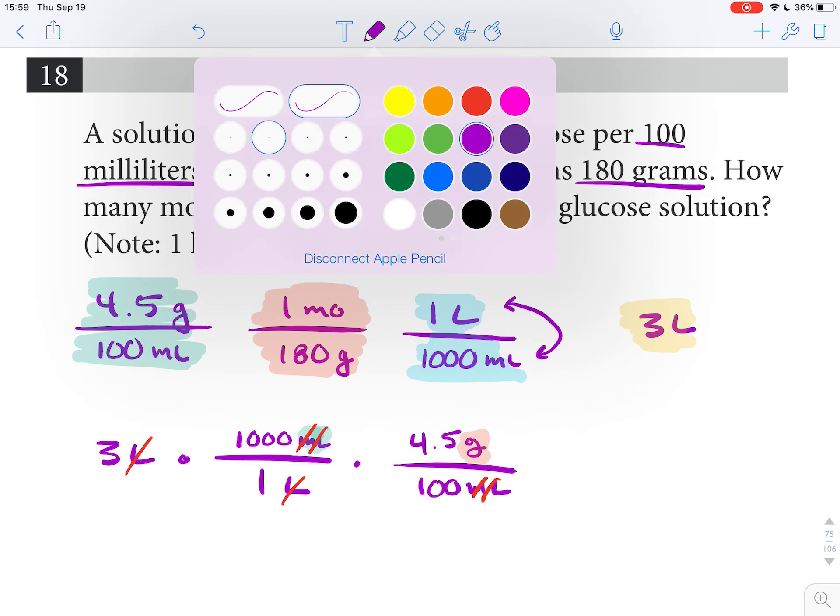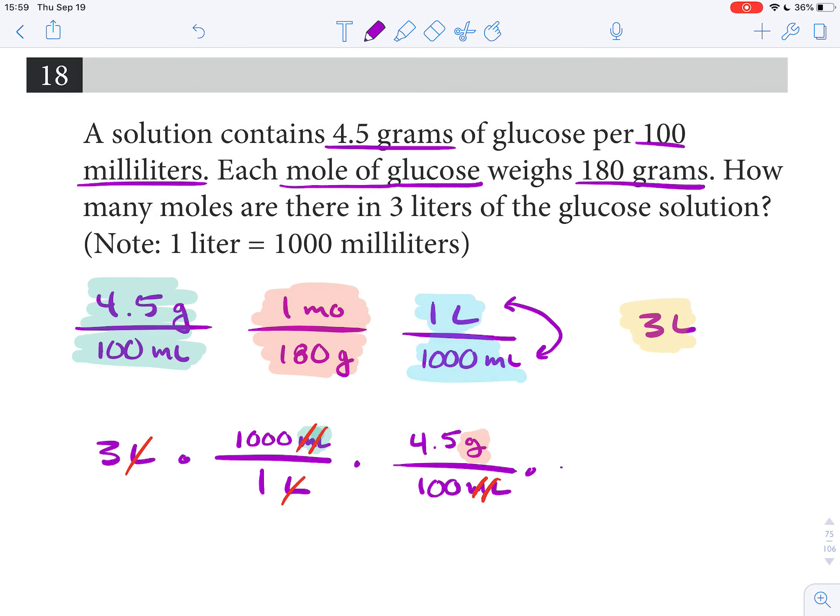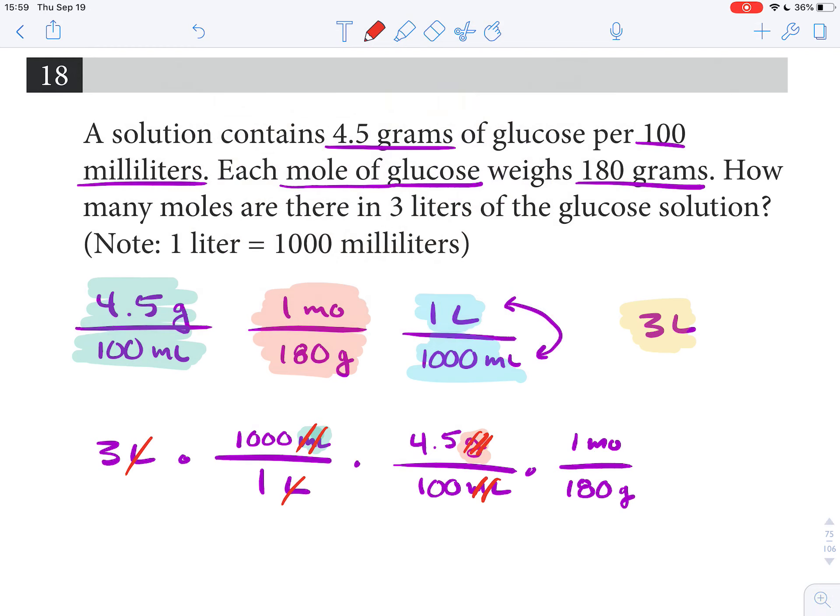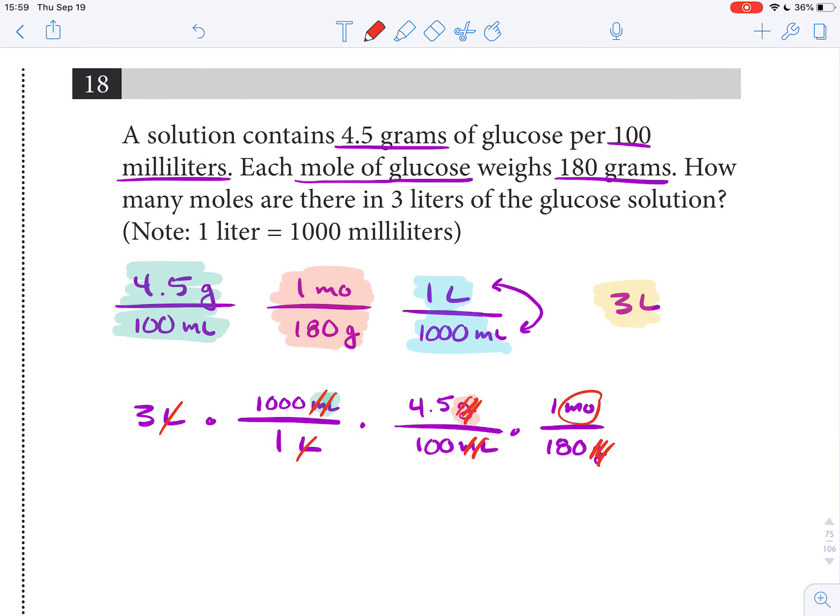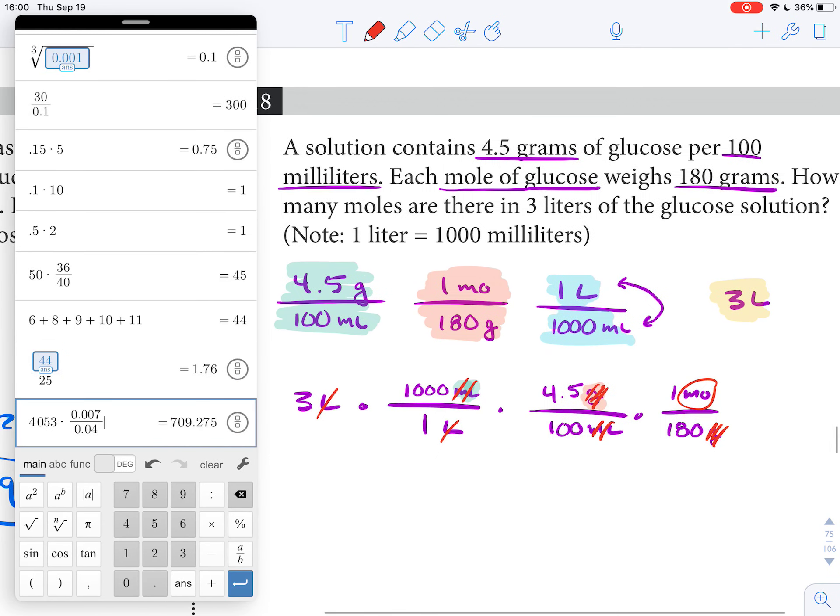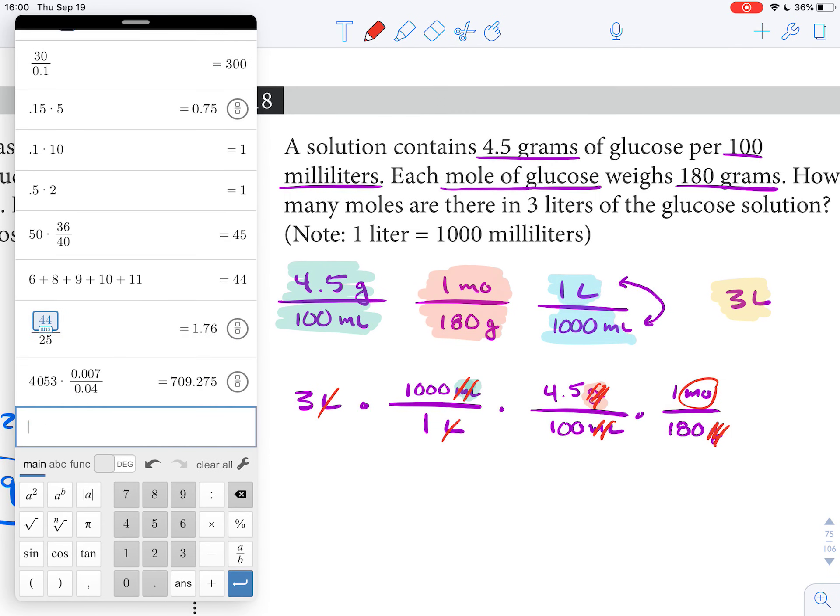We have it. It's written properly because grams will cancel if grams is in the denominator. So that's 180 grams for one mole. Grams are canceling and we're left with moles. Perfect. I like to write this stuff out before I use the calculator.